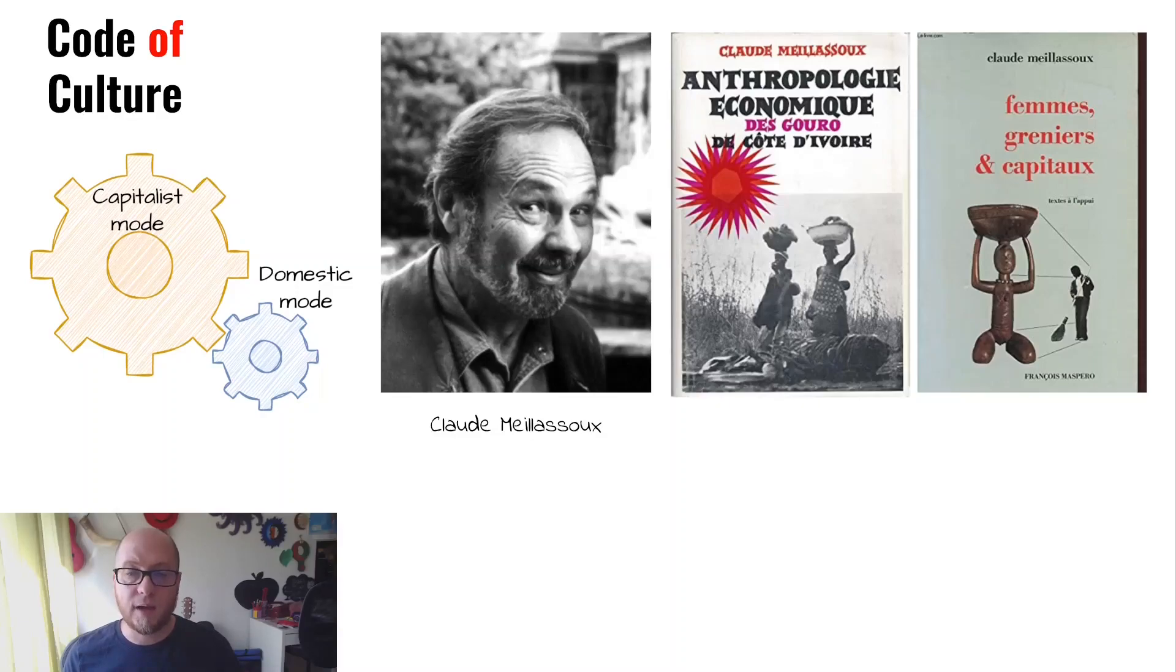He also claimed that capitalism depends on the domestic mode to extract wealth from the workers by not paying them retirement or not offering proper health or social services. Méliasseux called this the articulation of production modes. He also noted that this is similar to how capitalism uses illegal migrants in western countries. They are often used for cheap labor, and when they are no longer needed, they can be easily deported without receiving any social service or benefit.